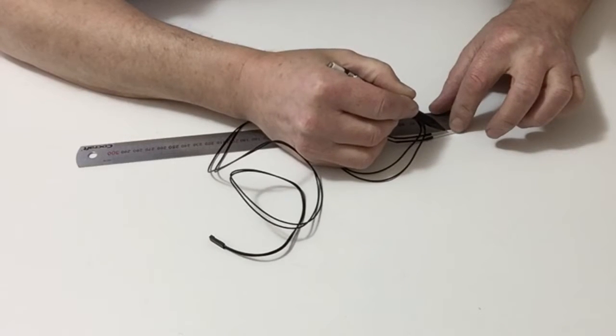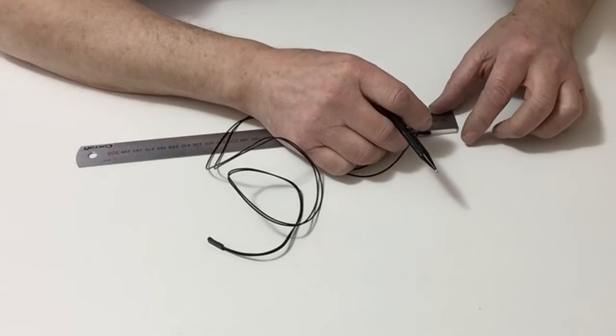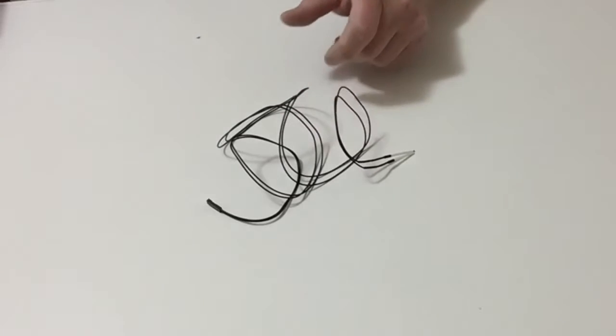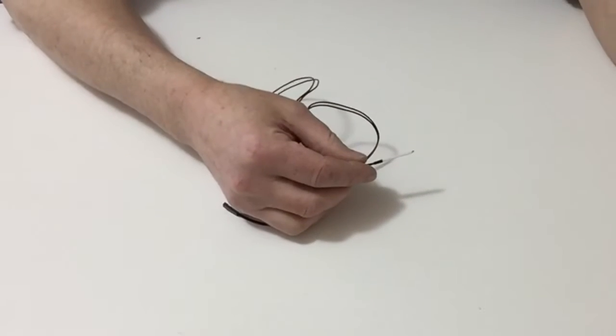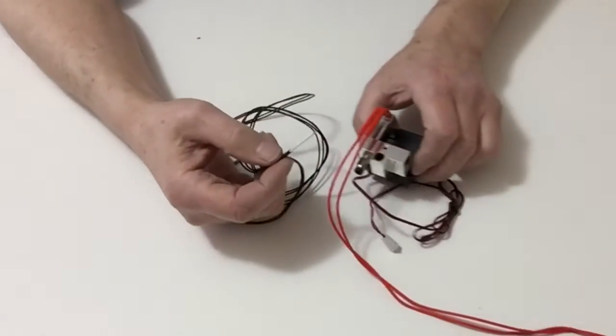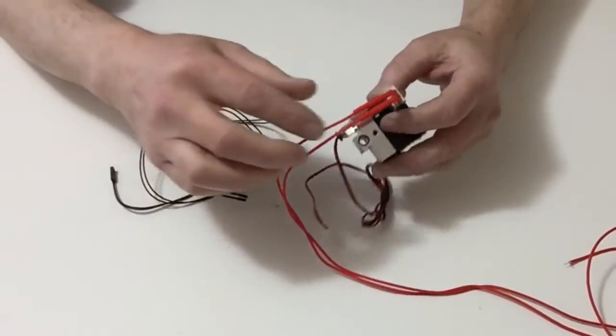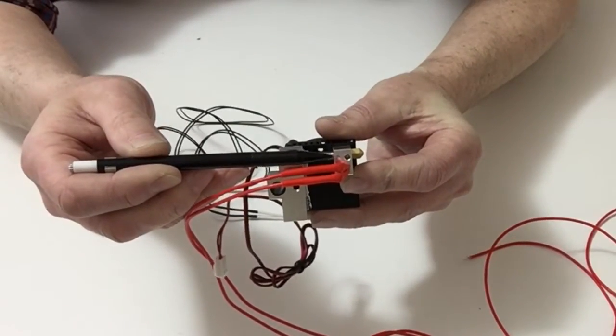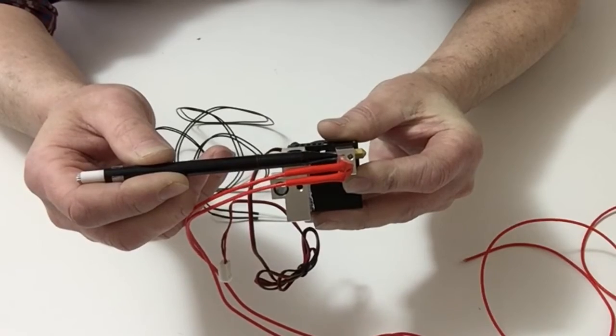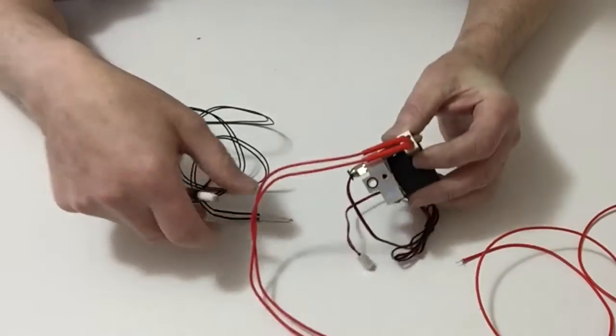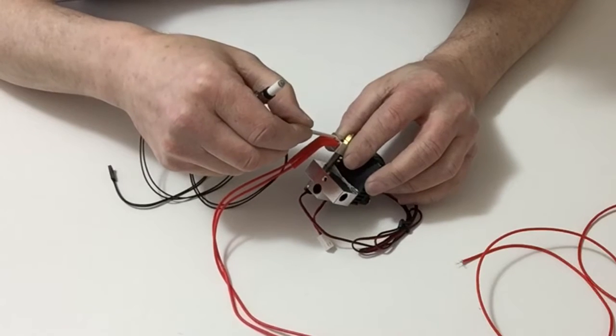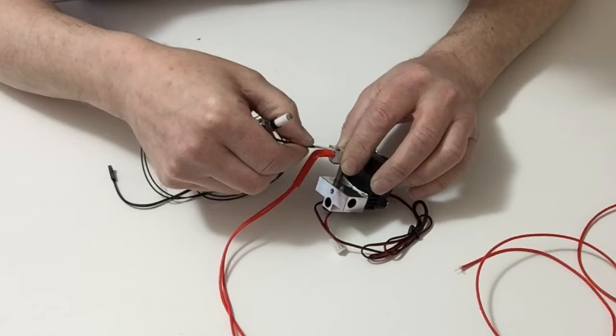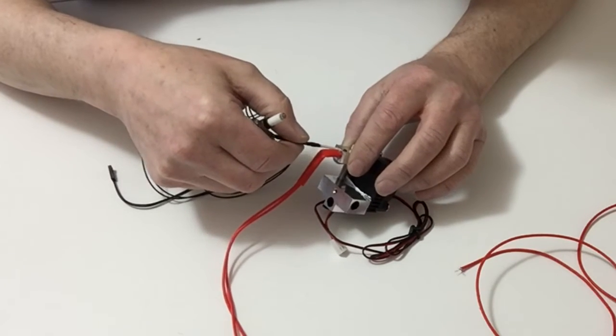Once you've done that, take the head block assembly that we last worked on in stage 30 and notice the small hole here which is 11mm in depth. Carefully place the thermistor into the hole down to the 11mm mark like so.